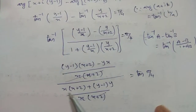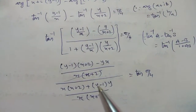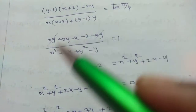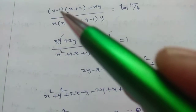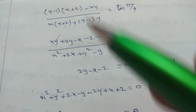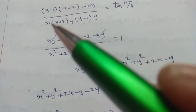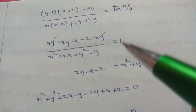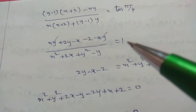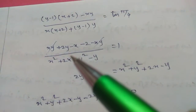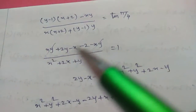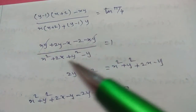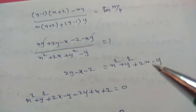Simplifying numerator and denominator: 2y minus x minus 2 minus xy, whole divided by x squared plus 2x plus y squared minus y, equals tan 45° which is 1. The xy terms cancel, leaving 2y minus x minus 2 in the numerator.